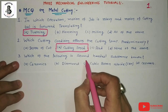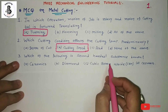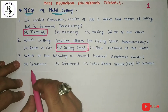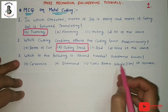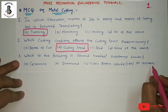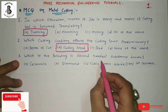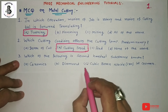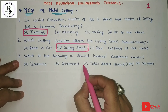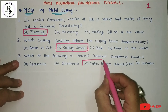Third question: Which of the following is the second hardest substance known? The options are: ceramics, diamond, cubic boron nitride (CBN), and cermets. After diamond, the second hardest substance is CBN — cubic boron nitride. It is an alloying element that increases hardness in materials. So CBN is the answer.